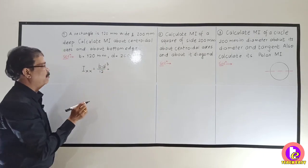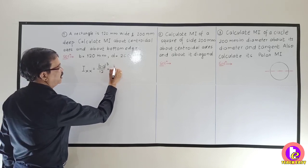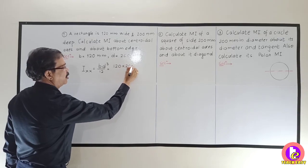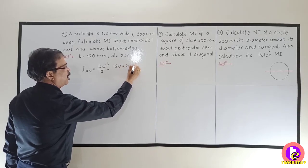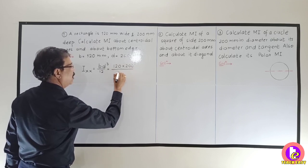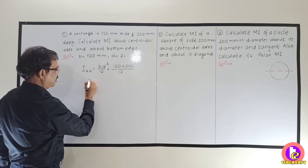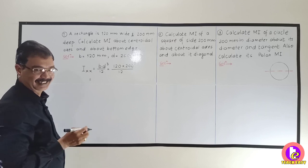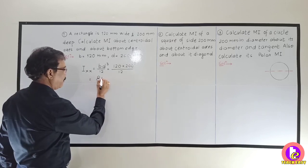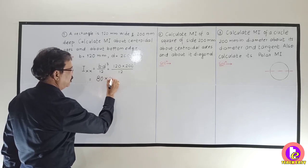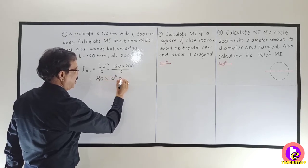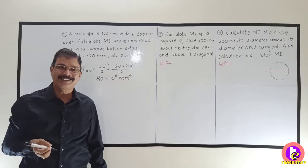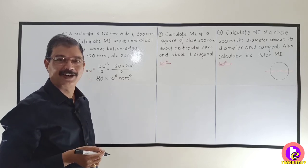Let us substitute the values of B and D. B is 120 mm and D is 200, cubed, divided by 12. Using a scientific calculator, you will get the value of IXX as 80 × 10⁶ mm⁴. This is IXX, that is the Horizontal Centroidal Axis.